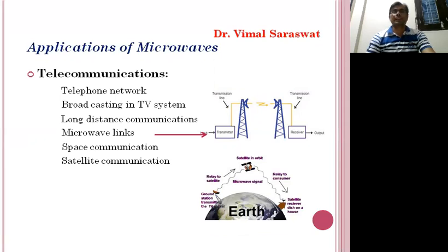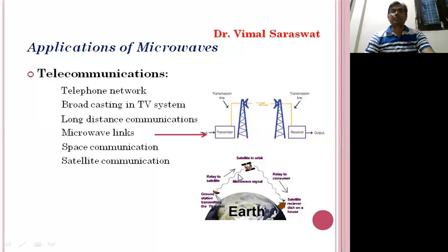This is our satellite communication system. Here we have a satellite. This is the ground station transmitting the TV signal, and this one is a satellite receiver dish on a house. So this is the transmitting portion, this is the receiving portion, and this is the satellite. Microwaves travel between the satellite and the transmitter and also between the satellite and the receiver.